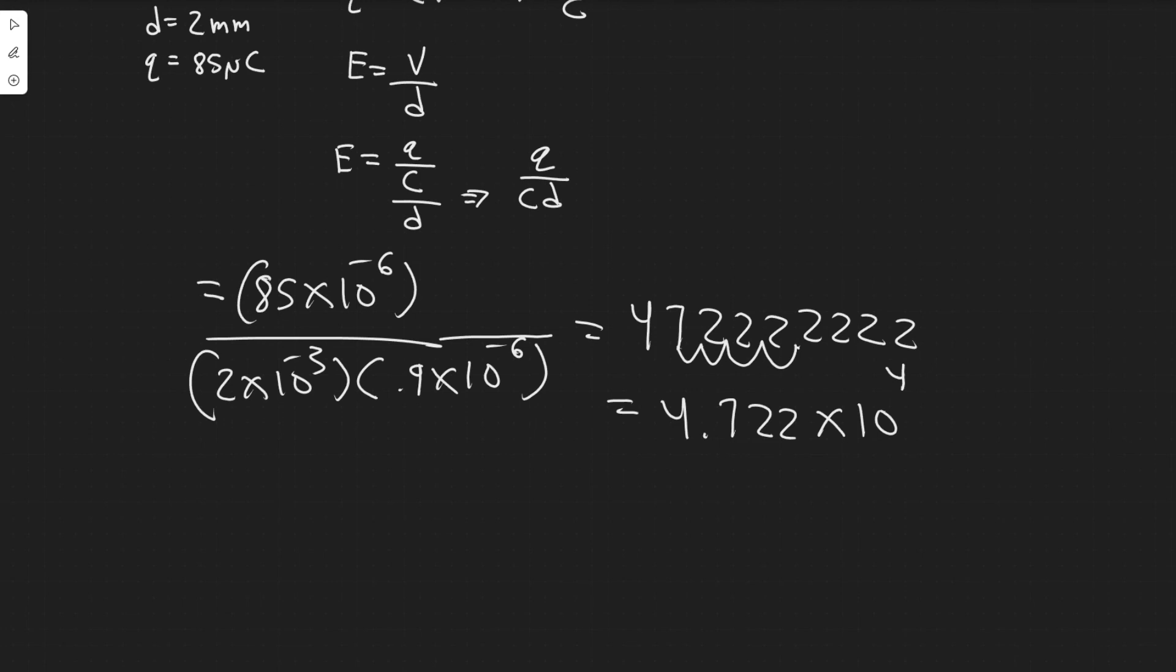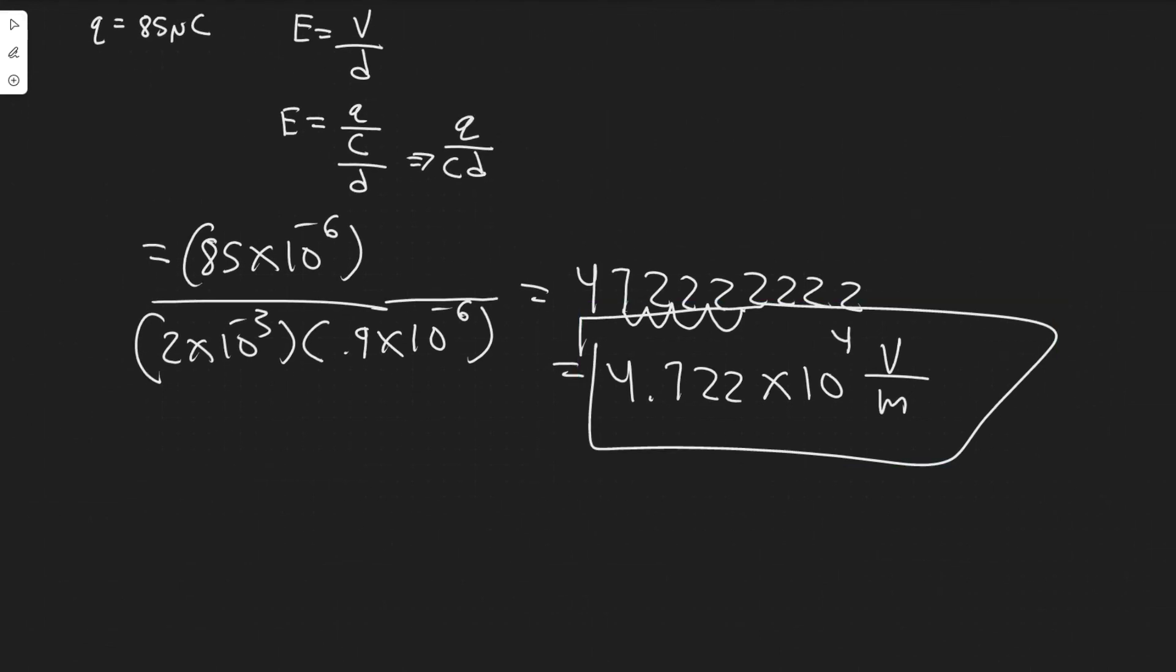The units are going to be, keep in mind that this would be in volts, this would be in meters. So you just define it as volts per meter. So this right here is going to go ahead and be your answer. So 4.7 times 10 to the four volts per meter. That's going to be the strength of the electric field. So this right here is going to be your answer. And hopefully you found this useful.